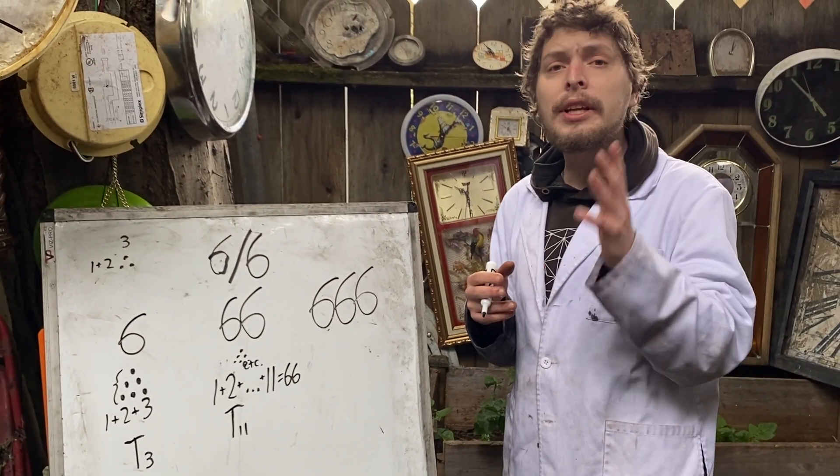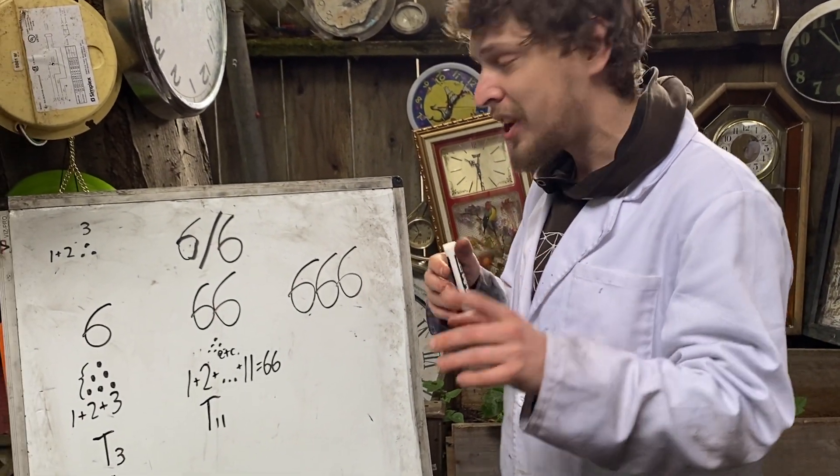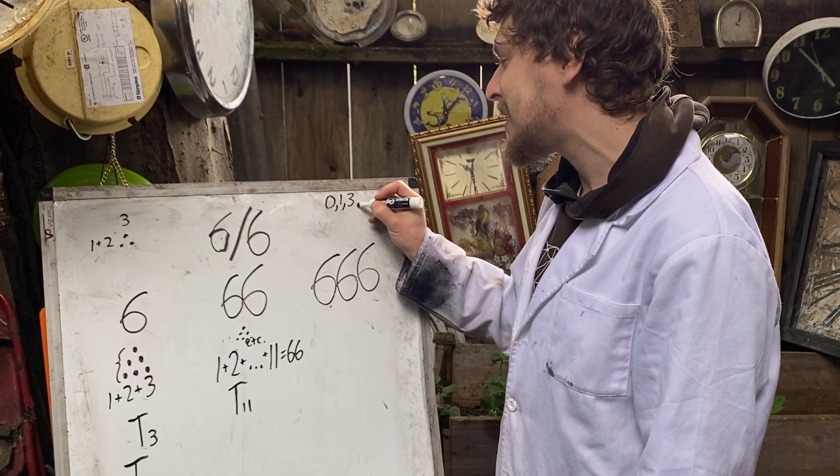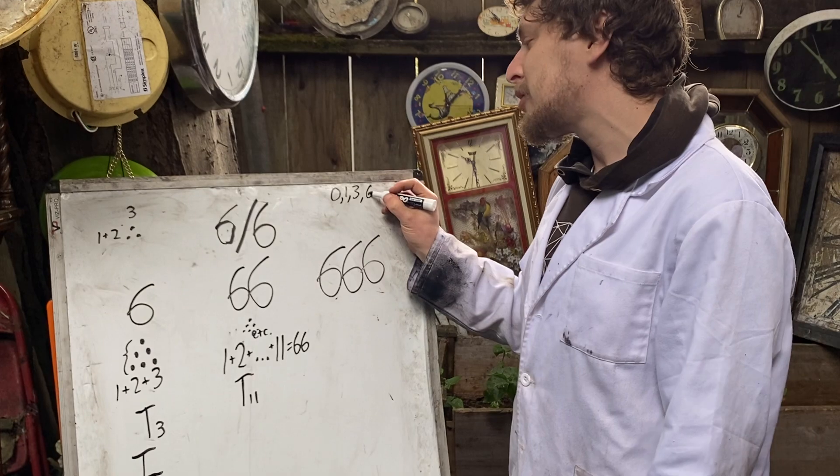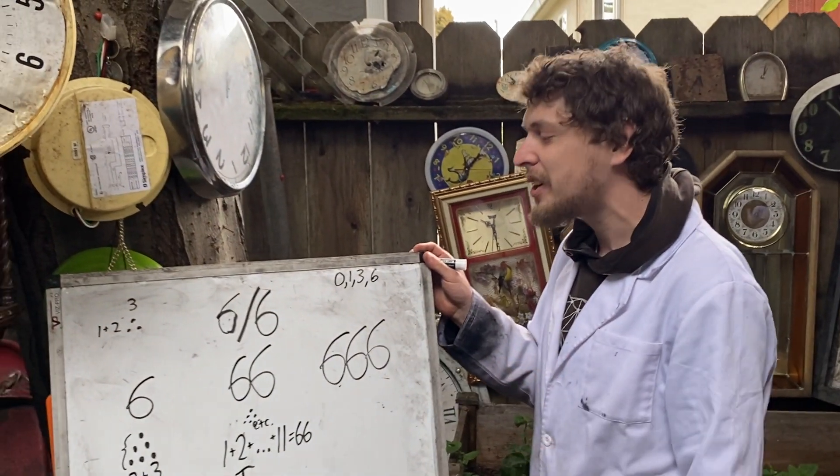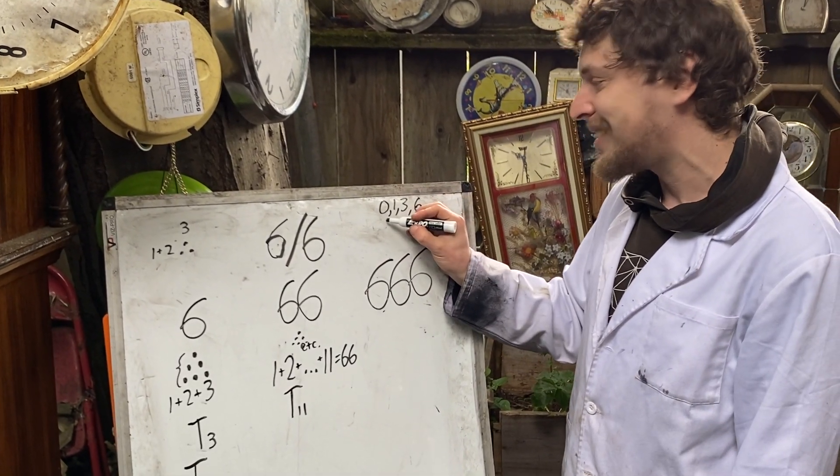In fact, the only rep digits that are triangular in base 10 are, if you include one-digit ones, 0, 1, 3, and 6. Those are a little trivial because any one-digit number only has a single digit. So you might not include those.